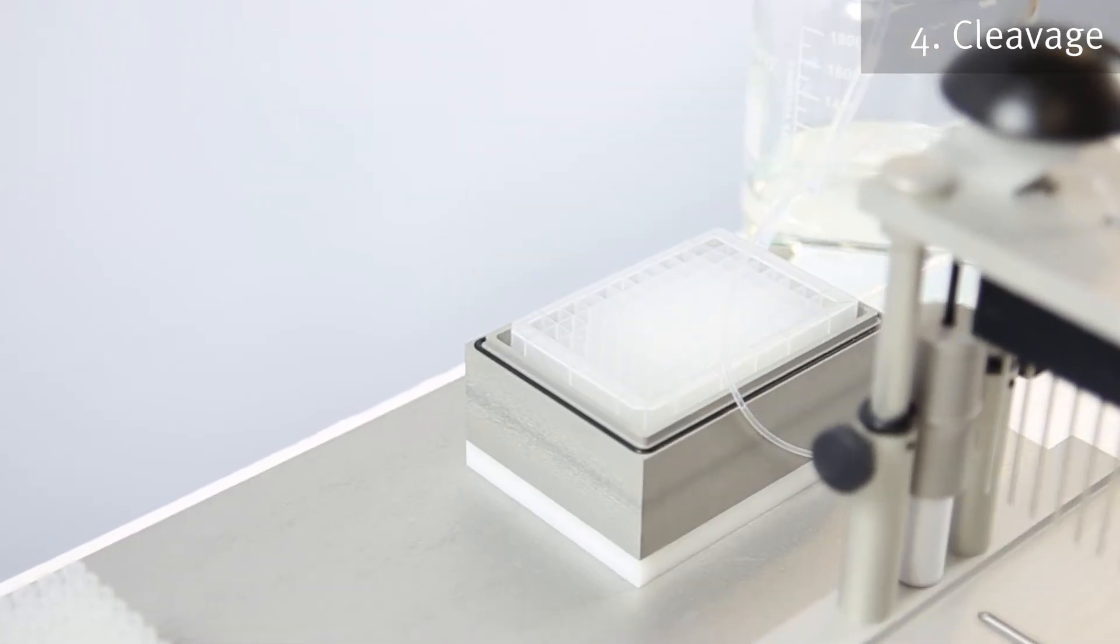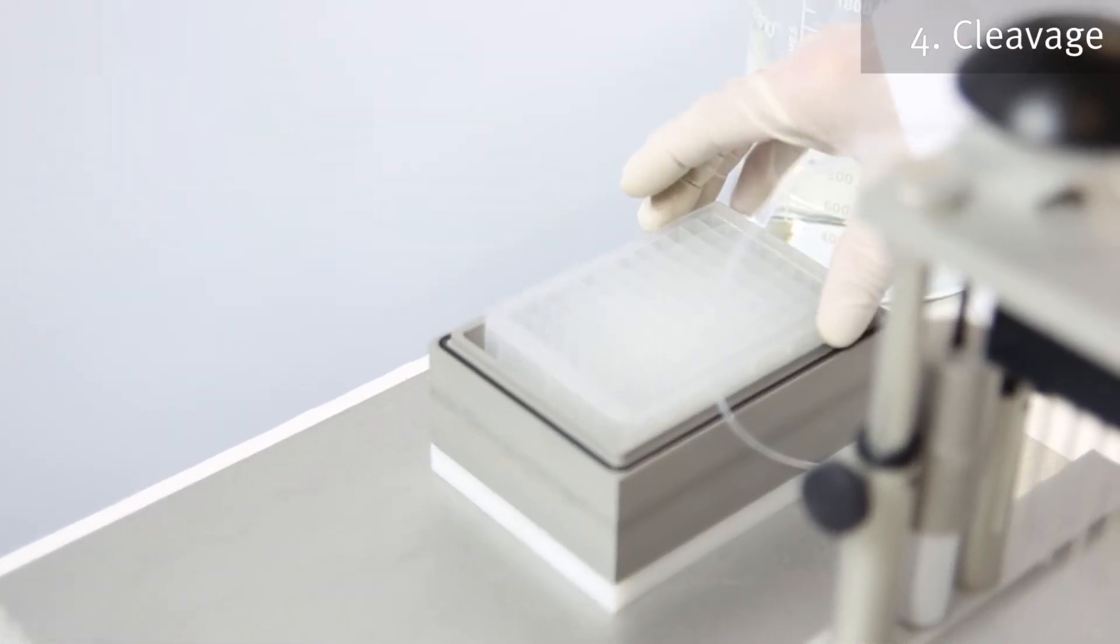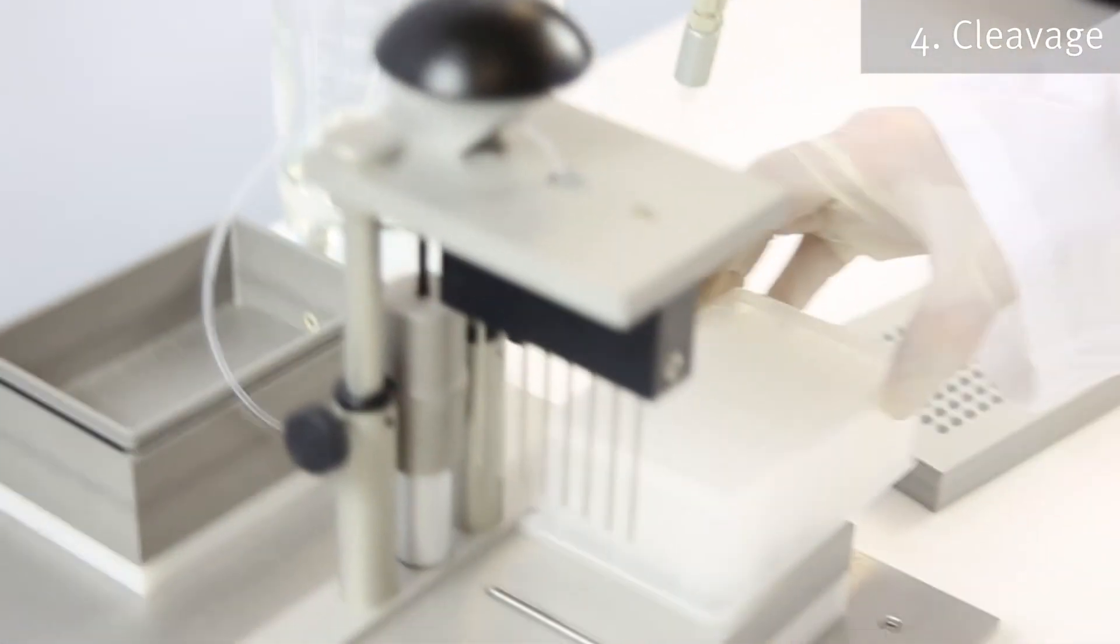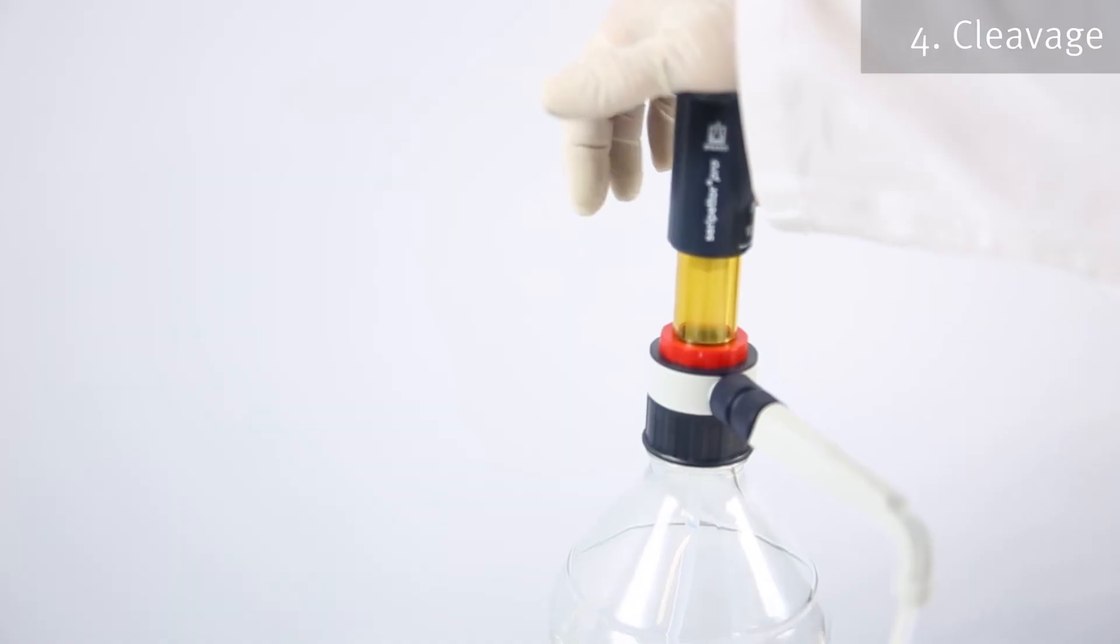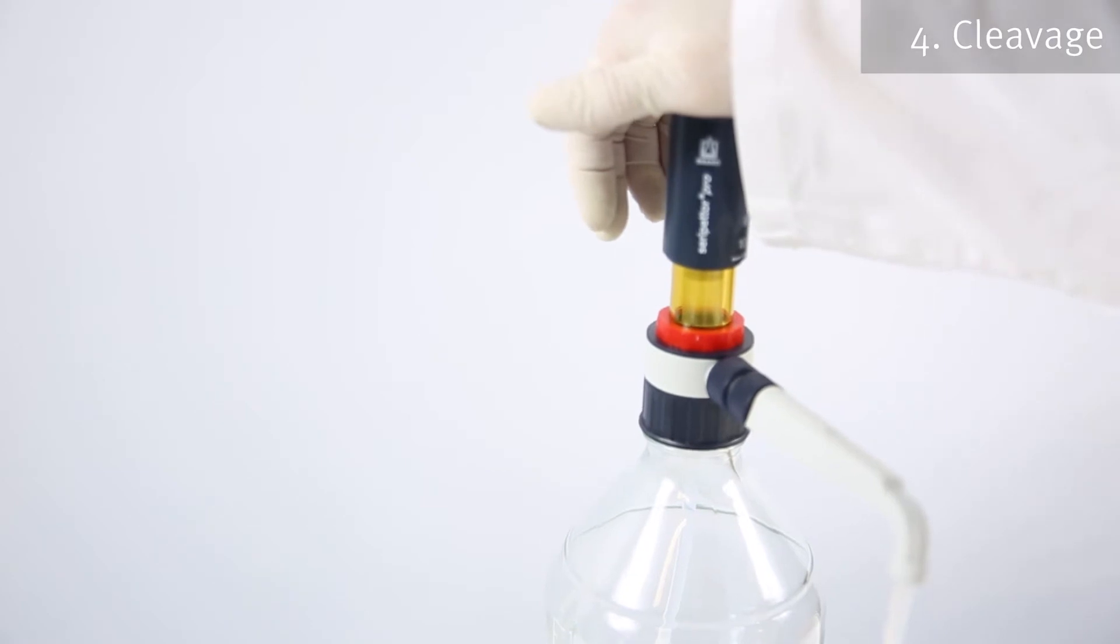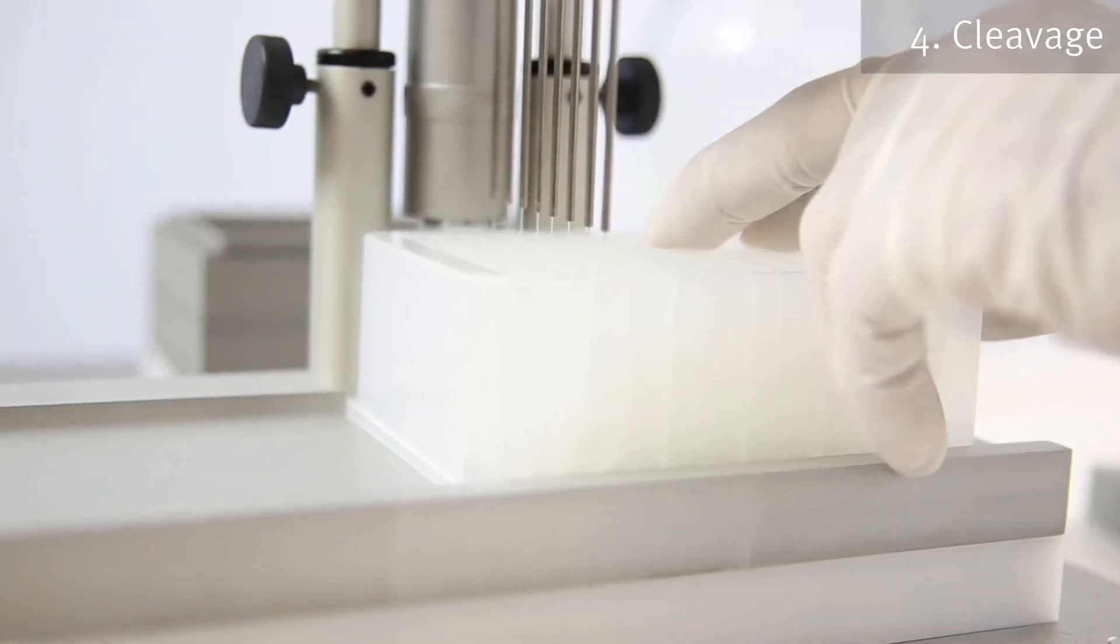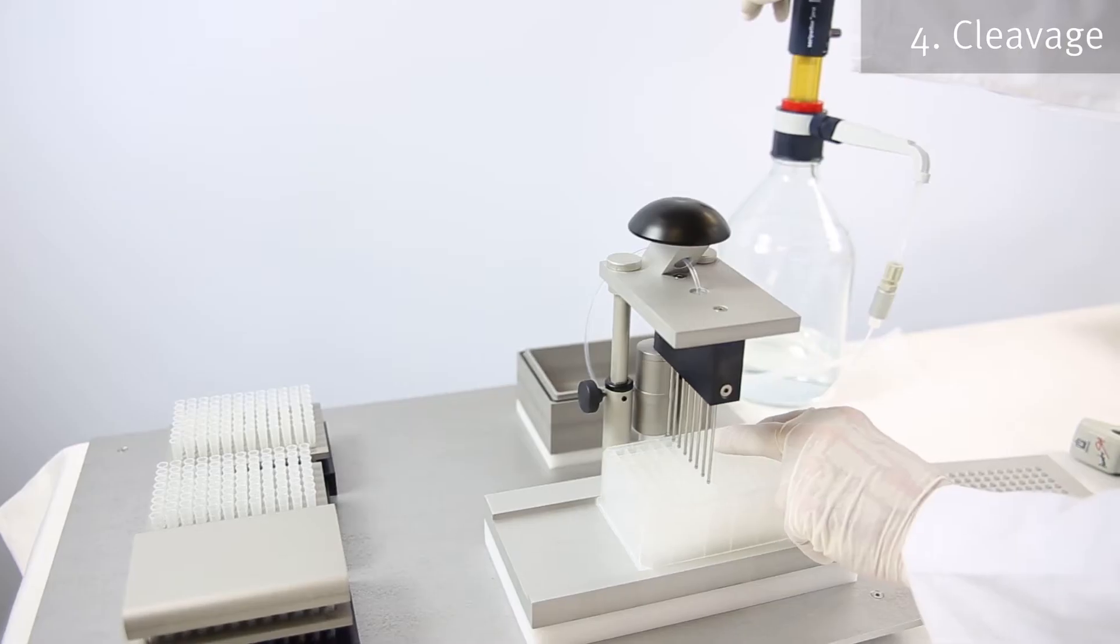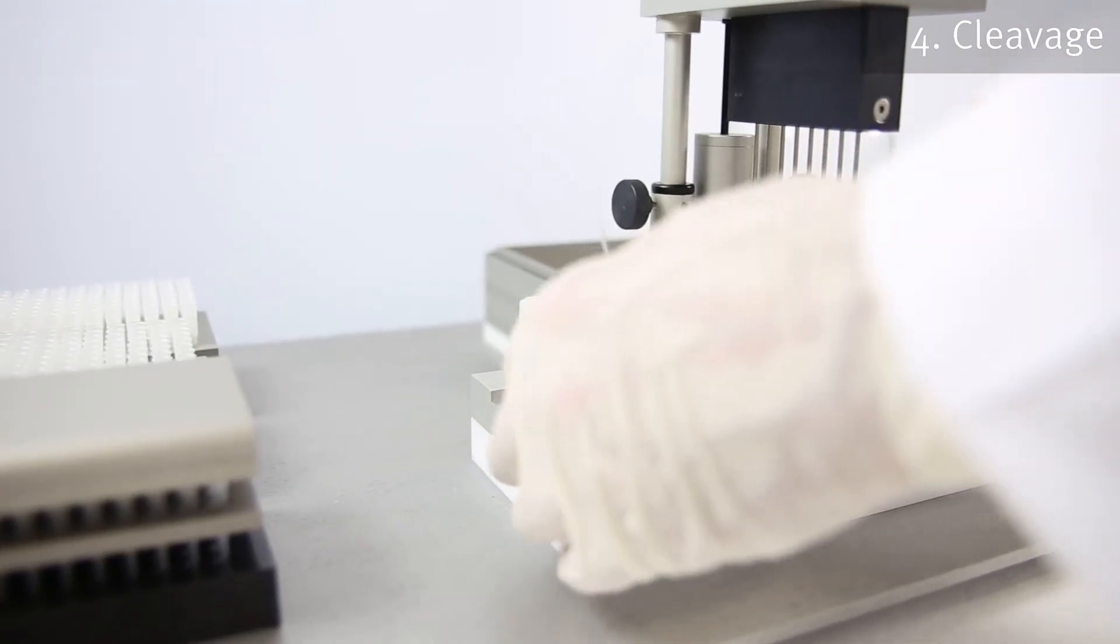The deep well plate is then moved to the aspirator dispenser. In dispenser mode, it is connected to a bottle containing ether or ether pentane in order to precipitate the peptides. 2 mL of ether or ether pentane is dispensed to the TFA cleavage solution in the deep well plate.